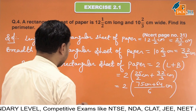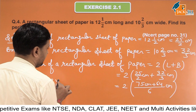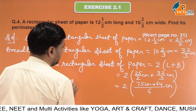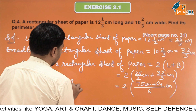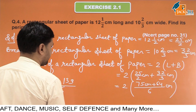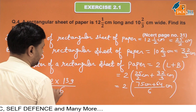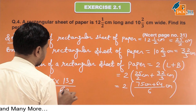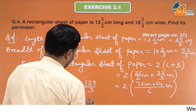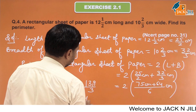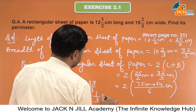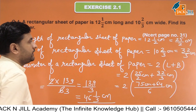When we solve this, we get 2 multiplied by (75 plus 64). 5 plus 4 is 9, 7 plus 6 is 13 — giving 139/6 centimeter. Then 2 times 1 is 2, 2 times 3 is 6, so 139 upon 3. Dividing: 3 times 4 is 12, carry 1; 3 times 6 is 18, carry 1 — giving a remainder of 1 upon 3 centimeter. So the perimeter is 46 and 1/3 centimeter.